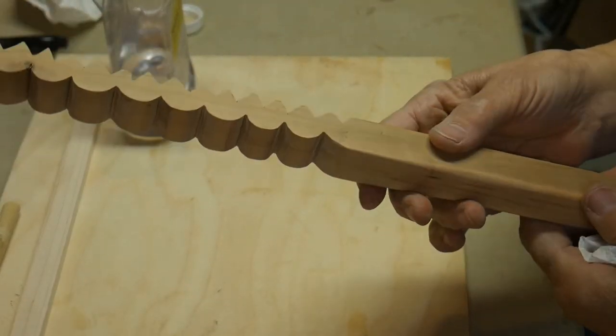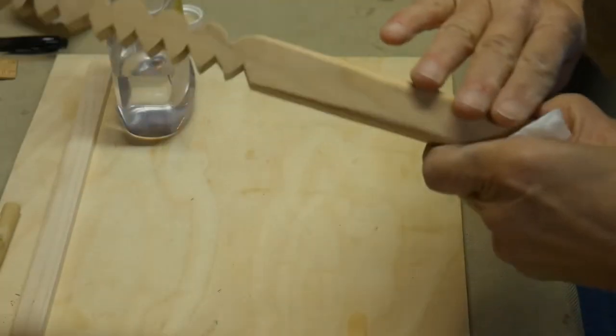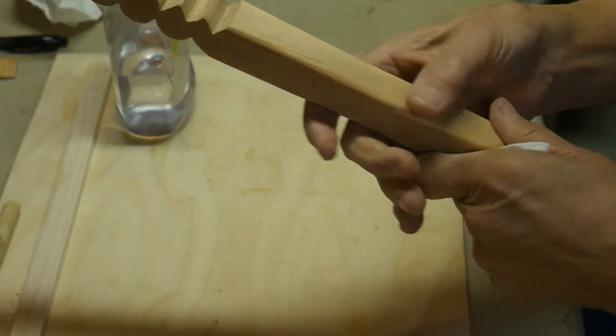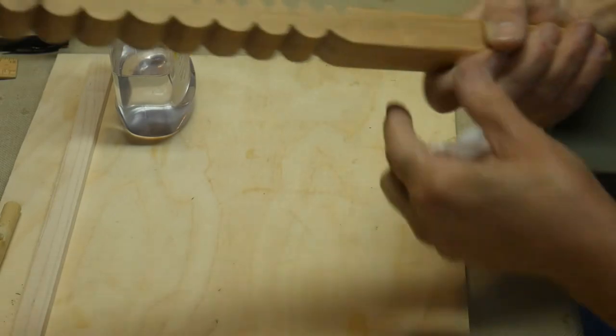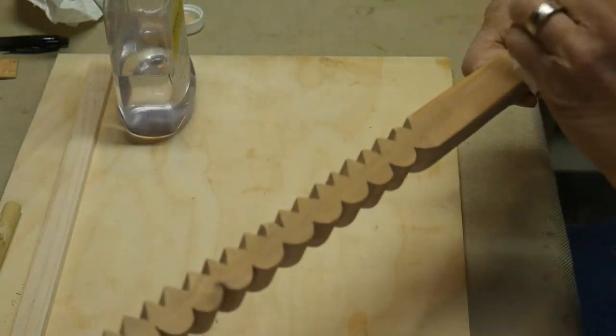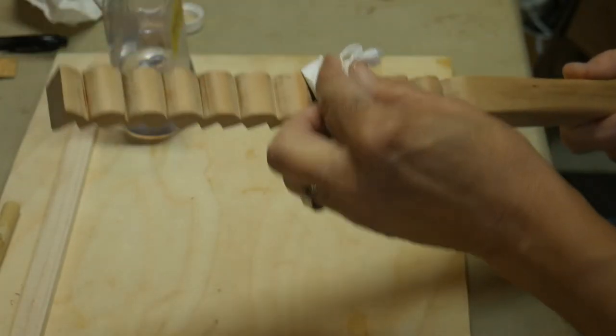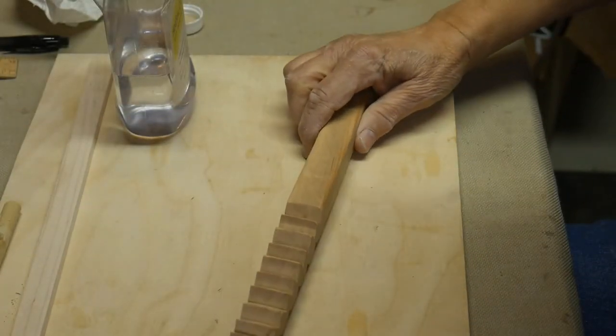Once you've gotten your piece sanded to the way that you like it, I have nice rounded corners here so that's a nice handle to hold on to. And I've wiped off all the extra sawdust and I'm ready to seal it.